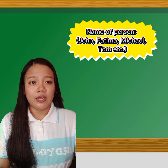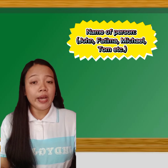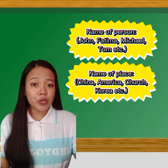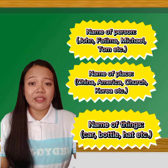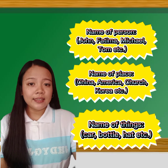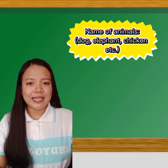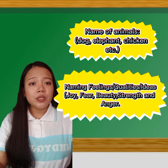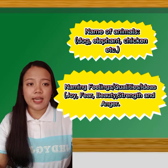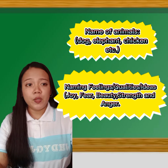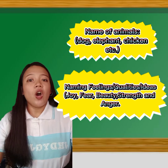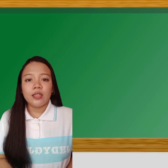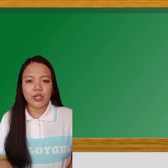It could be a name of a person like John, Fatima, Tom, Michael, and so on. Name of place like China, America, Church, Korea. Name of things like car, bottle, hat. Name of animals like dog, elephant, chicken. And it could also name feelings, qualities, ideas like joy, fear, beauty, strength, and anger. All of these are nouns. The more nouns you know in a language, the better you will be able to communicate your ideas.